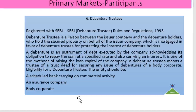Debenture trustees are appointed before the issue of debentures by the company. They need to obtain a certificate of registration from SEBI as per the SEBI Debenture Trustee Rules and Regulations Act. The debenture trustee acts as a liaison between the issuer company and the debenture holders, and holds secured property on behalf of the issuer company, which is mortgaged in favor of the debenture trustees for protecting the interest of debenture holders.